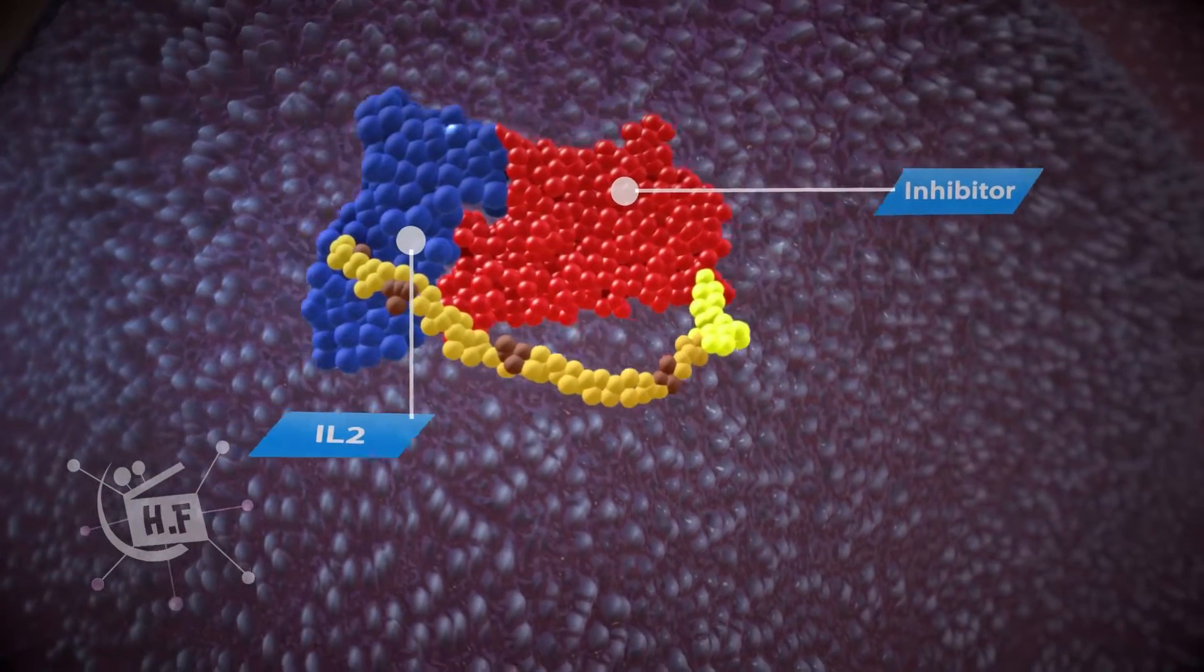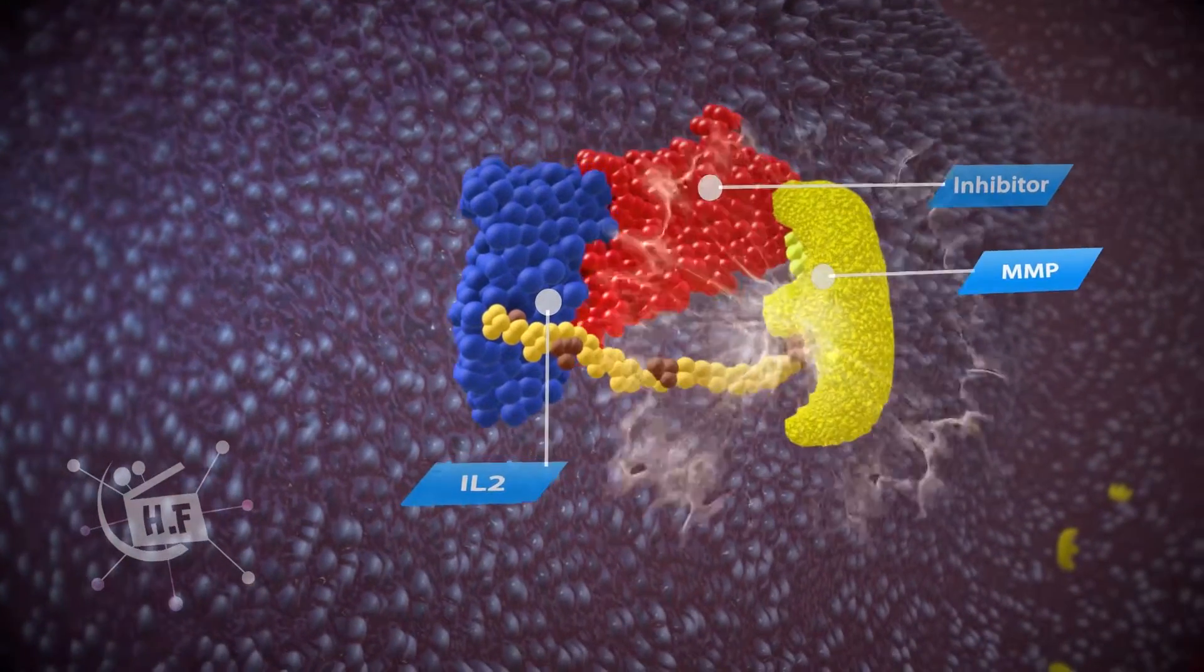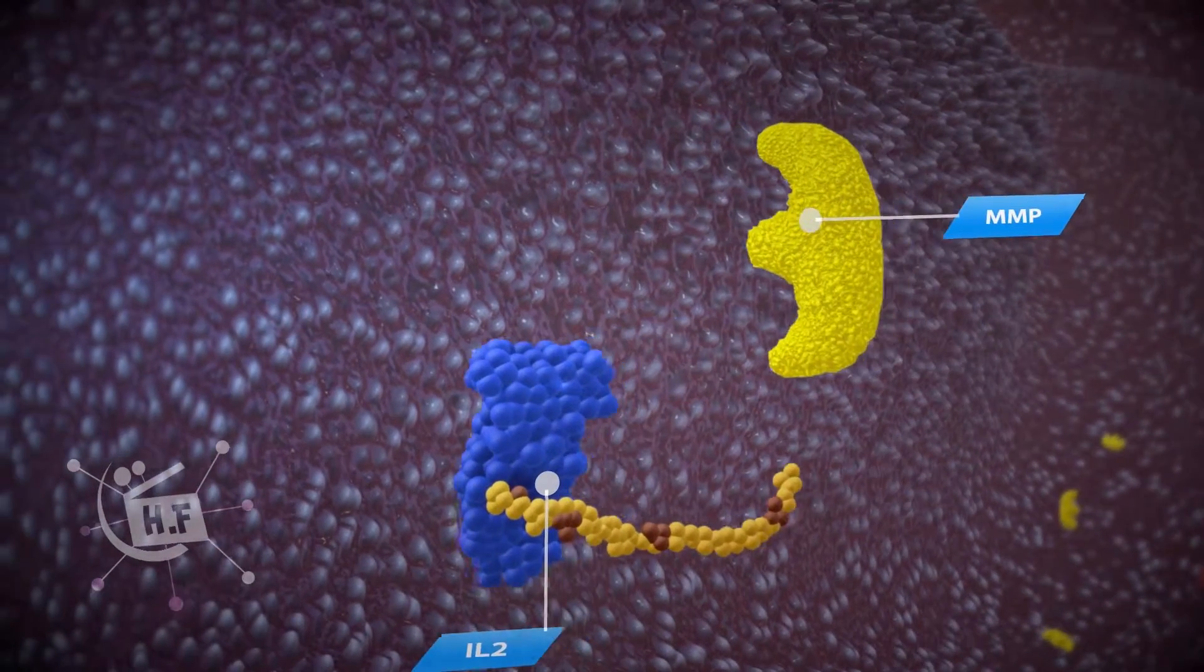Our protease-activated IL-2 drug becomes active when exposed to the matrix metalloproteinases that surround tumors, as the in-built inhibitor module is cleaved away.